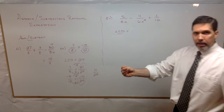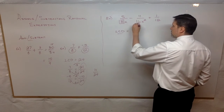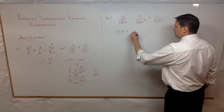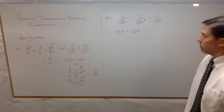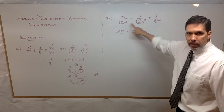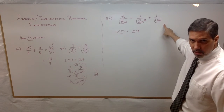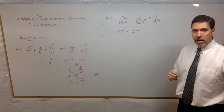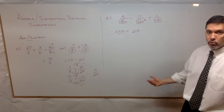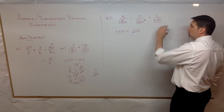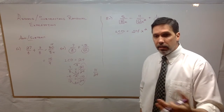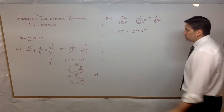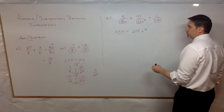With monomials, you compare the coefficients first: 8, 6, and 12. The least common denominator of 8, 6, and 12 is 24. Then you go to your variables: 8x has one factor of x, 6x squared has two factors of x, and 12 has no factors of x. In order for all three to divide into the LCD, it has to accommodate the greatest number of factors, so you need two factors of x. The LCD is 24x squared. Then we turn the subtraction into addition and take the negative through, making it a giant addition problem.